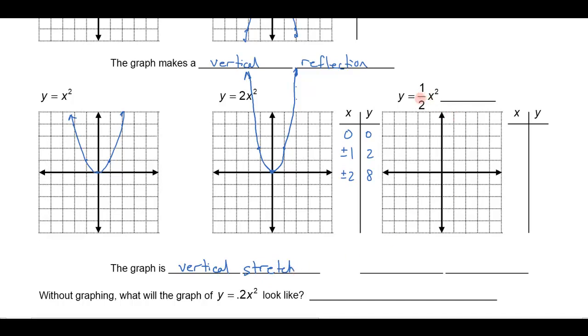Likewise if I were to graph y equals one half x squared. If I were to plug in a 0, well 0 squared is 0 and then I'll take half of 0 which is 0. If I were to plug in 1 or negative 1 I'll square that but then I'm going to take half of that 1 which is just a half. So instead of at x equals 1 being 1 I'm only going to get half of that. If I plug in plus or minus 2 and square that'll give me 4 but then only one half of that which is 2.